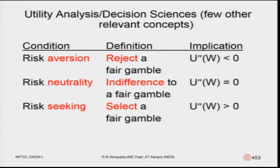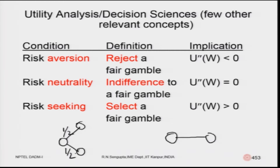A risk averse person would reject a fair gamble — even though probabilities are half and half, they believe they will get the downward outcome and avoid risk. A risk neutral person is indifferent to the fair gamble — equally disposed in both directions. A risk seeking person looks at the upward trend and selects the fair gamble as their choice.